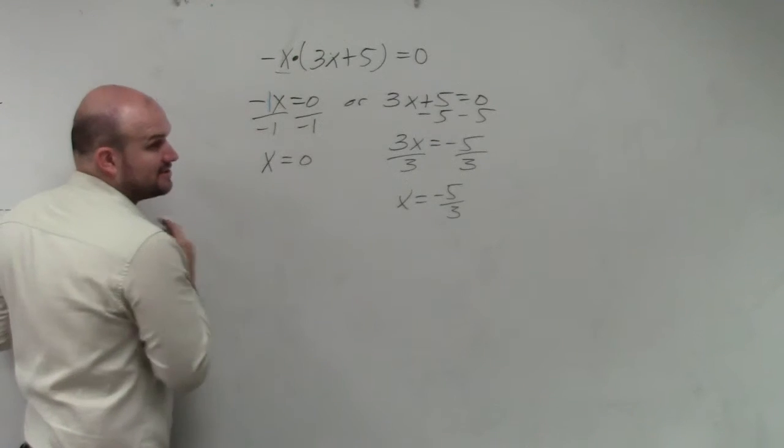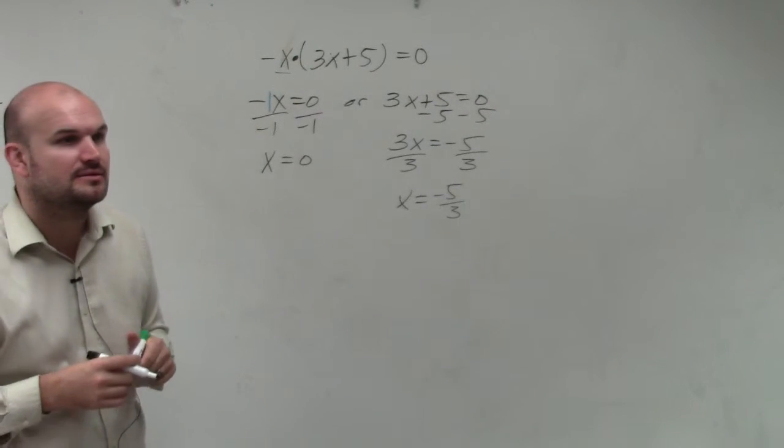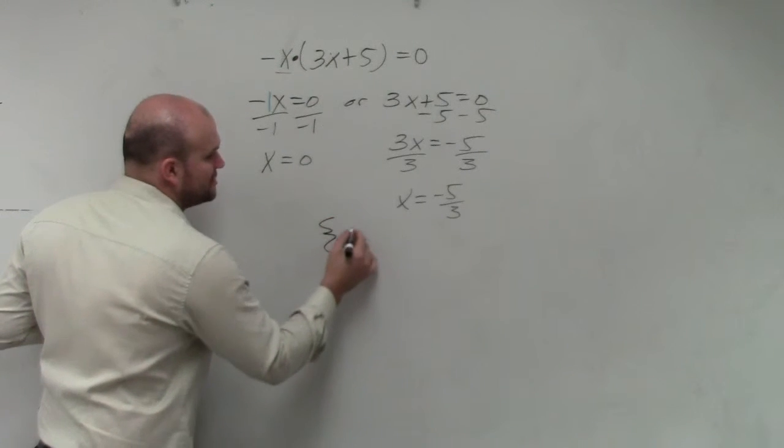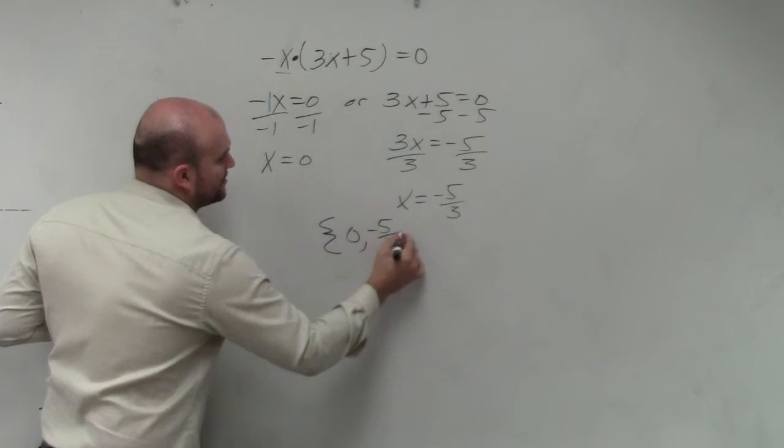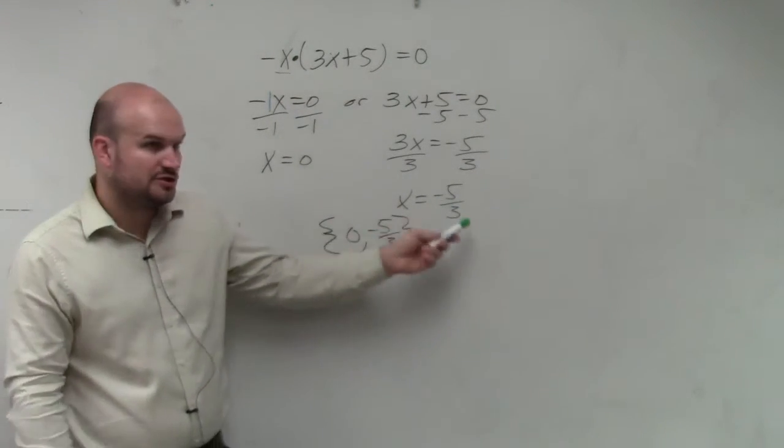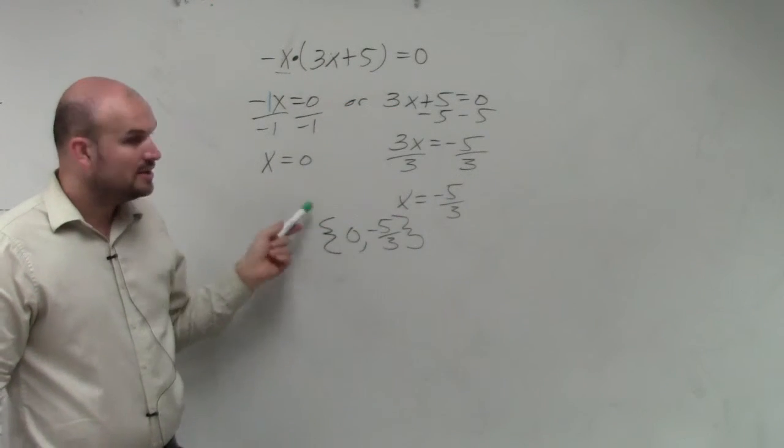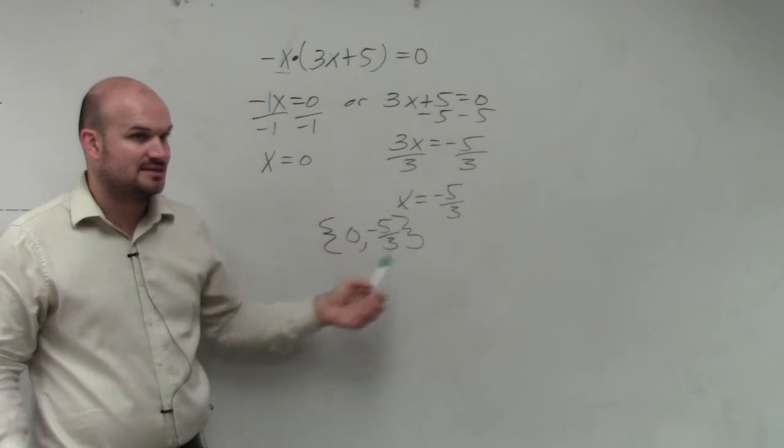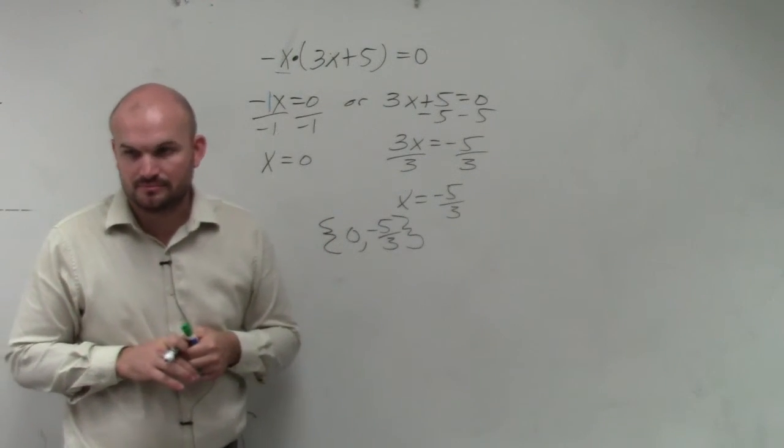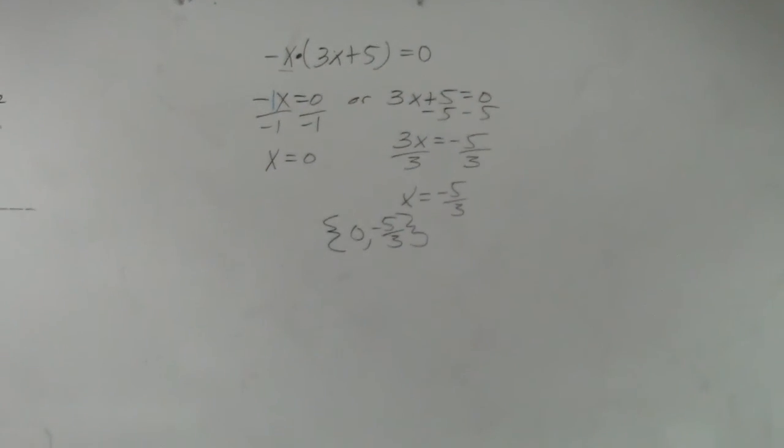The other thing I want to introduce to you guys is set notation. You guys might see this on your test as far as your answer solutions. So just note that this is what we call a solution set. Basically, these are your two solutions - these are the two values that make your product equal to 0. Sometimes you'll see them as a set. Basically, you'll have these brackets that contain all of the solutions of the problem. OK, so when you guys are giving your answer...